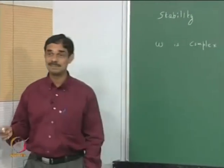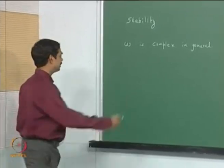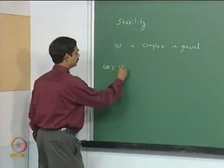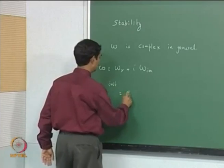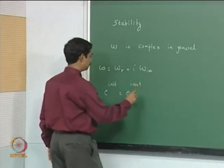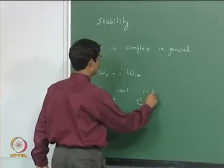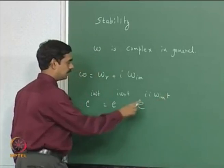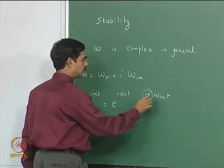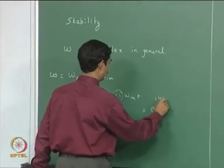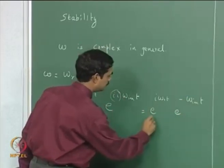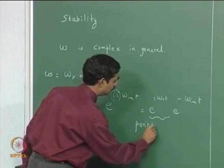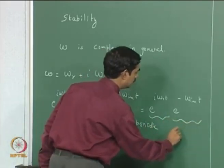Let me emphasize this again because it is perhaps the most important thing in this class. Omega equals omega_real plus i times omega_imaginary. So e^(iωt) = e^(iω_real·t) · e^(i·i·ω_imaginary·t). Since i·i = −1, we can rewrite this as e^(iω_r·t) · e^(−ω_imaginary·t). This is the periodic part, and this is the growth or decay.